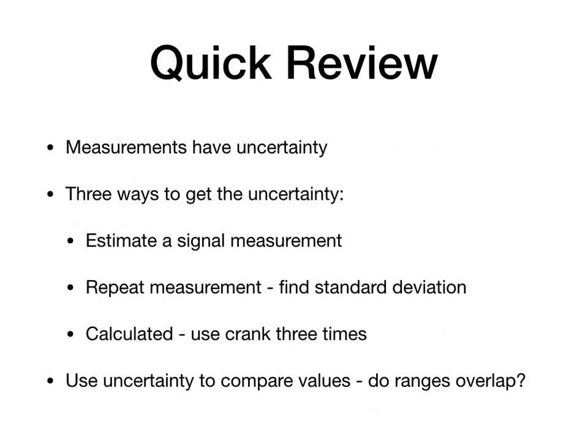So, measurements have uncertainty. There's three ways to get uncertainty. Estimate a single measurement. And then, that's your uncertainty. Two, repeat the measurements many times. Not three. More is better. And find the standard deviation and the average. And three, use the crank three times method. And then compare them.